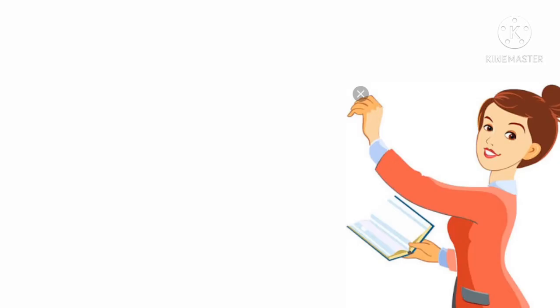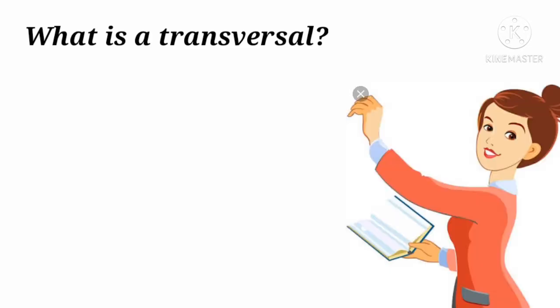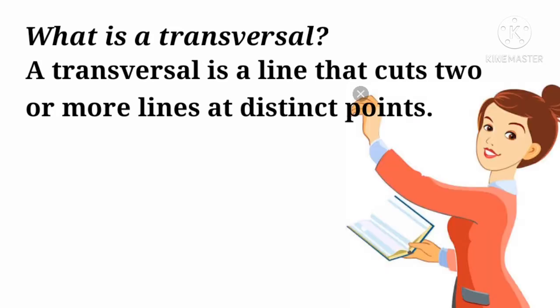Transversal. Children, you might have seen a road crossing two or more roads, or a railway line crossing several other lines. These are some of the examples for transversal. A transversal is a line that cuts two or more lines at distinct points.